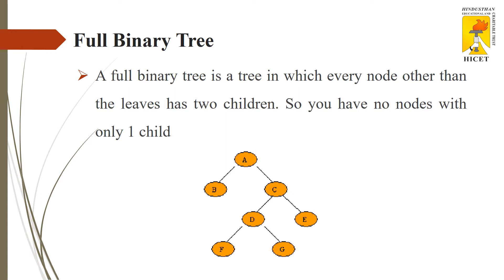The next type is full binary tree. A full binary tree is a tree in which every node other than the leaf node has 2 children. So all the nodes are compulsory to have 2 children, except the leaf nodes. In this example, node A has 2 children B and C, node C has 2 children D and E, and node D has 2 children F and G. The leaf nodes B, F, and G do not have children. So this is a full binary tree.